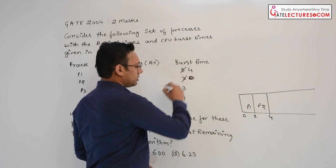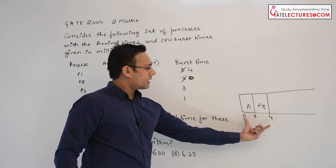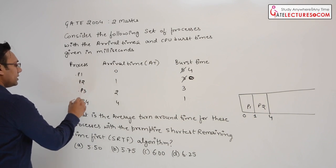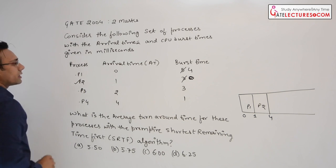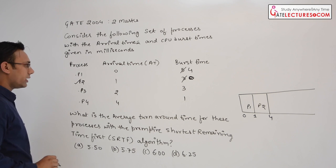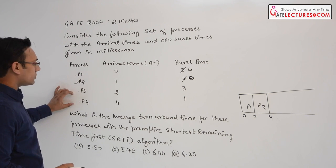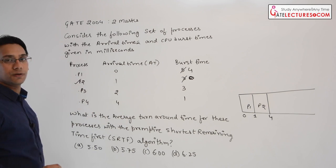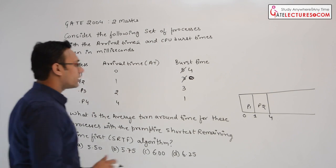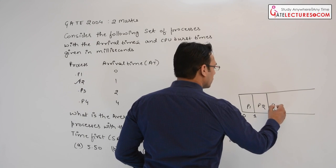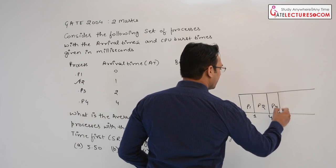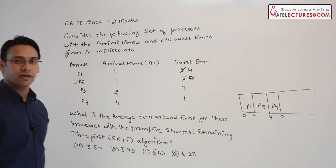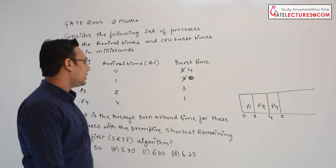At time 4, P2 has completed its execution. The remaining processes are P1, P3, and P4. Out of these three, P4 has the shortest remaining burst time, so we execute P4 completely from time 4 to time 5, since its burst time is only 1 unit.